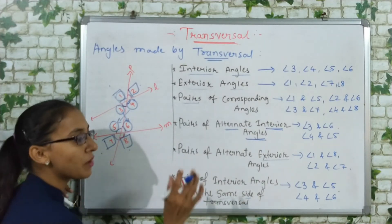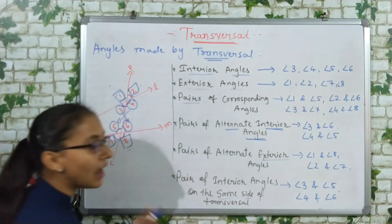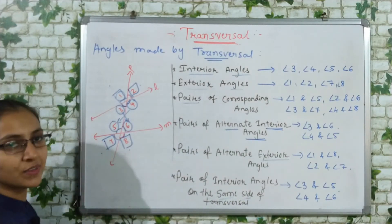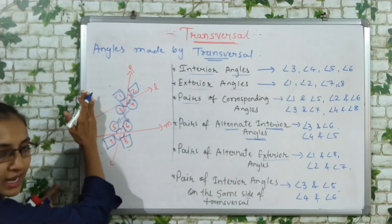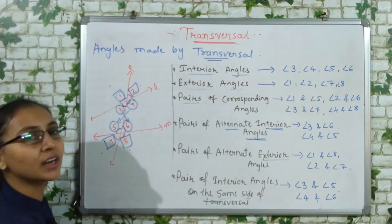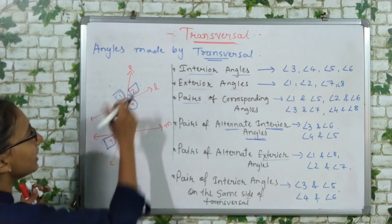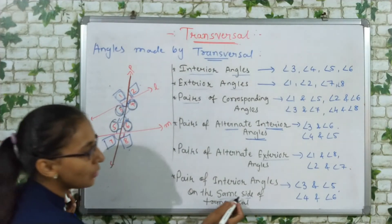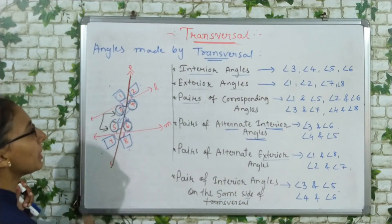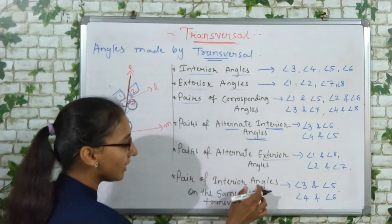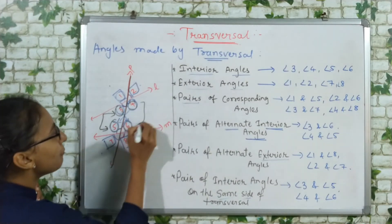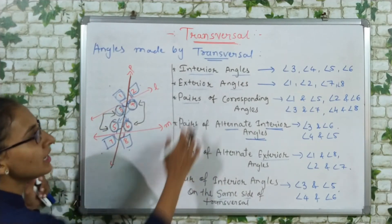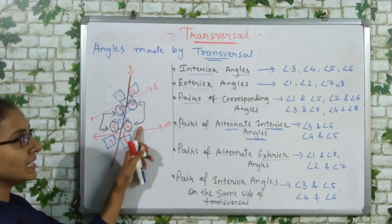The last type is pairs of interior angles on the same side of the transversal. From the name itself: we are talking about interior angles — so angles 3, 4, 5, 6. Now 'on the same side of transversal' — line p is our transversal. If we look at one side, the angles on that same side are 3 and 5. So 3 and 5 are interior angles on the same side of the transversal. On the other side, 4 and 6 are interior angles on the same side of the transversal.